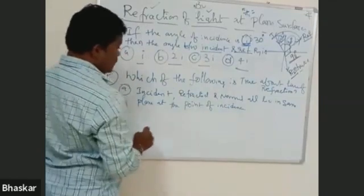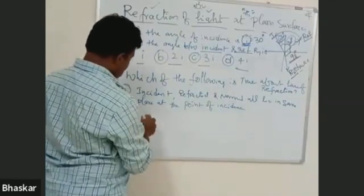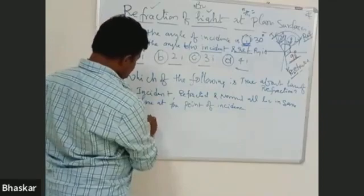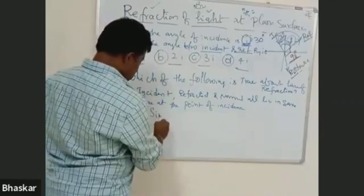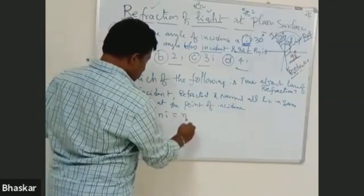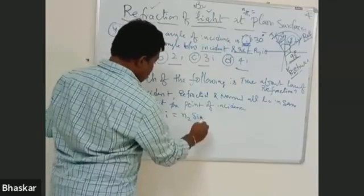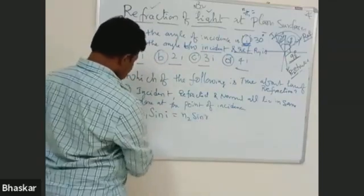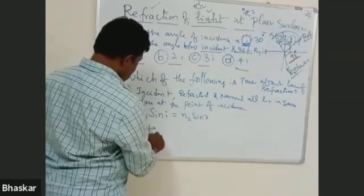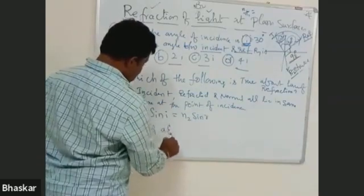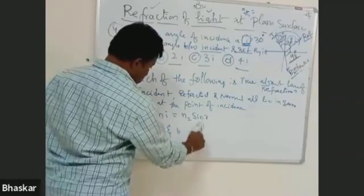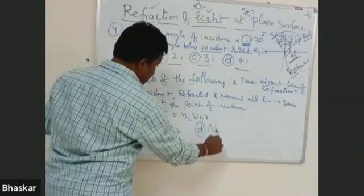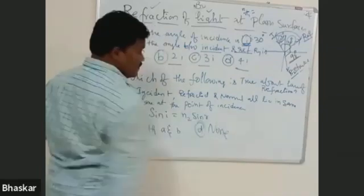Option B: N1 sin I is equal to N2 sin R. Option C: Both A and B. Option D: None. Okay.